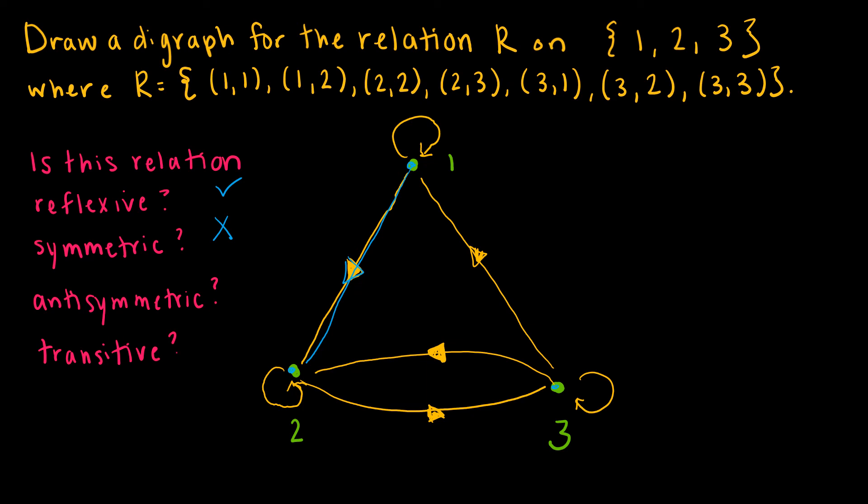Is it antisymmetric? Remember, antisymmetric says if 1, 2 is in there and 2, 1 is in there, that means that obviously 1 and 2 are equal. So let's take a look. Do we have an example? 2, 3 is here. 3, 2 is here. But 3 and 2 are not equal to one another, so not antisymmetric.